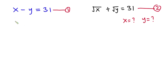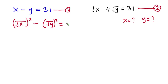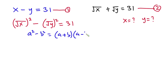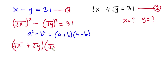From equation 1, x is also the same as square root of x to the power 2, then minus y is also the same as square root of y to the power 2, and this is equal to 31. From algebraic identities, if you have a squared minus b squared, this is the same as (a plus b)(a minus b). So this equation becomes square root of x plus square root of y, times square root of x minus square root of y, and this is equal to 31.